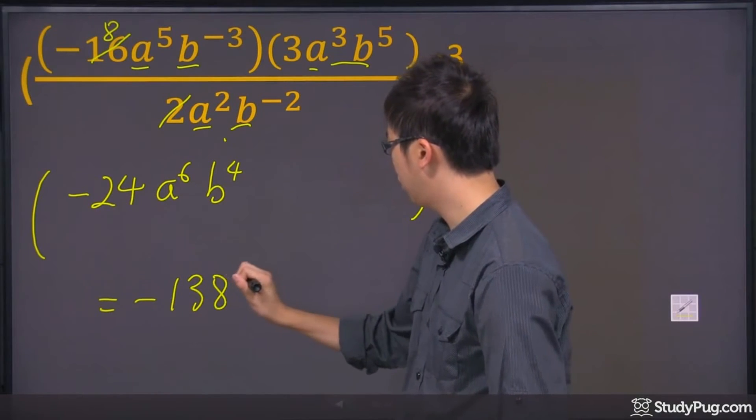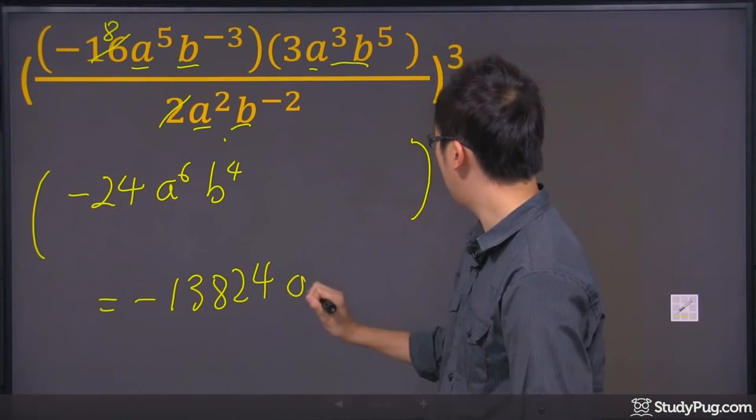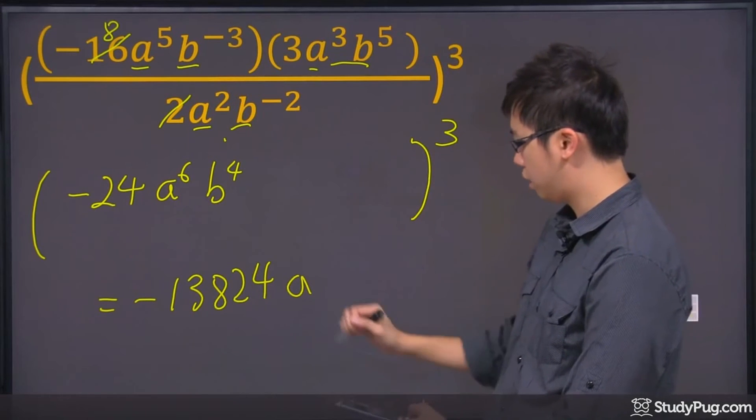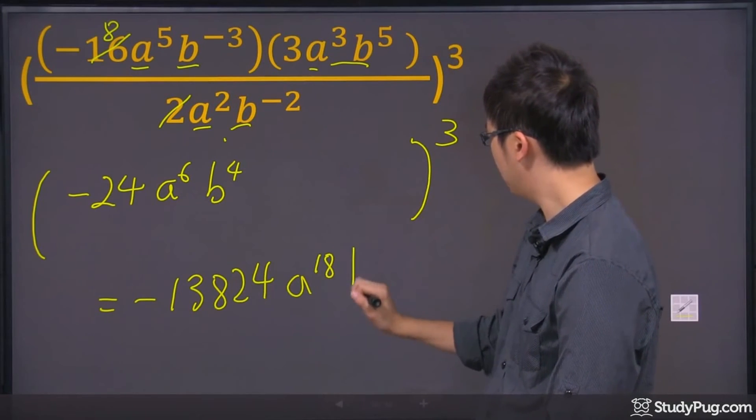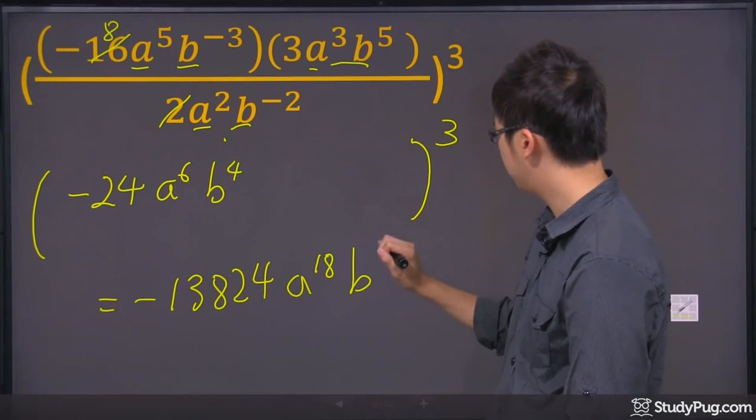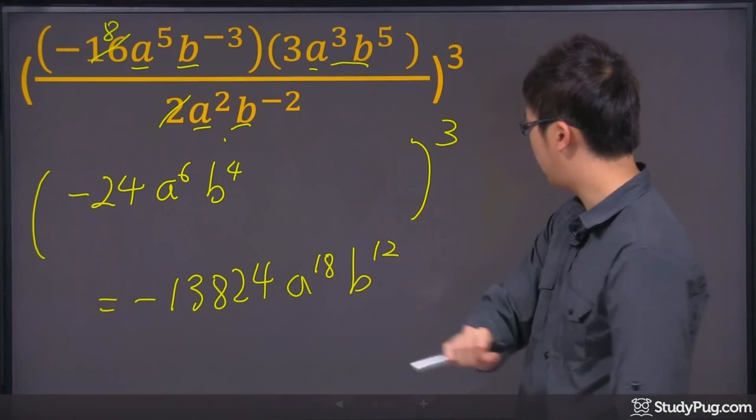So it's 13824. And you can do A to the power of 6 to the power of 3. We've got an 18 right there. And then we've got 4 and 3 for the B, so B to the power of 12. And that's that.